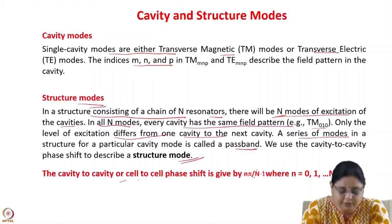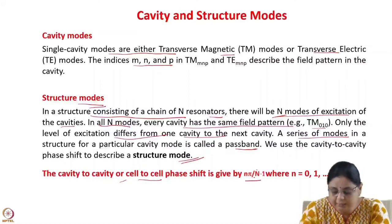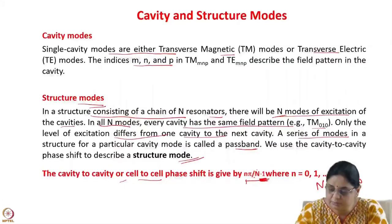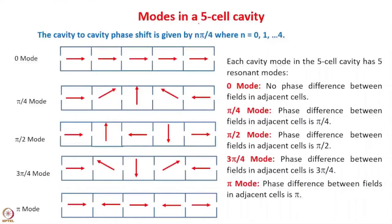A series of modes in a structure for a particular cavity mode is known as a pass band, and we use cavity-to-cavity phase shift to describe the structure mode. The cavity-to-cavity phase shift is given by nπ/(N−1), where N is the number of periodic cells and n takes values from 0 to N−1. So you have N modes. In a 5-cell cavity for the TM010 mode, each cavity mode has 5 resonant modes. The cavity-to-cavity phase shift is given by nπ/4 where n = 0, 1, 2, 3, and 4.